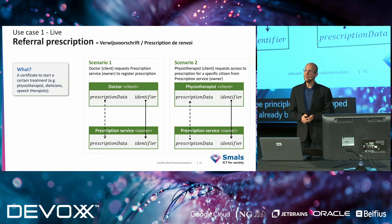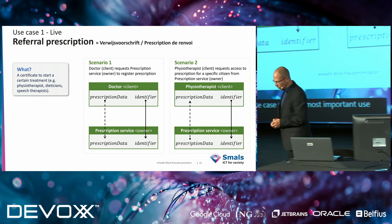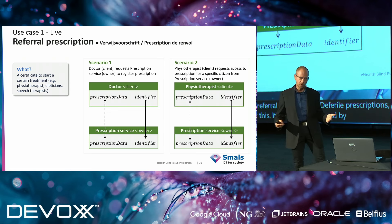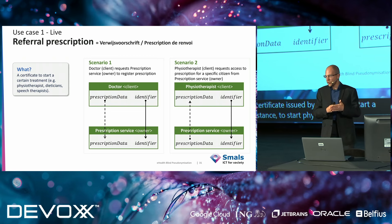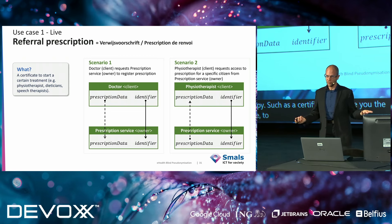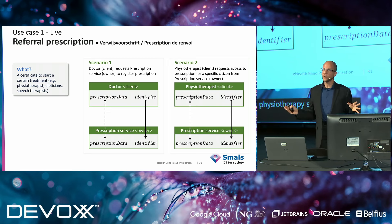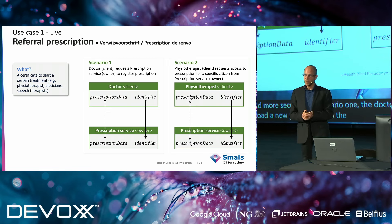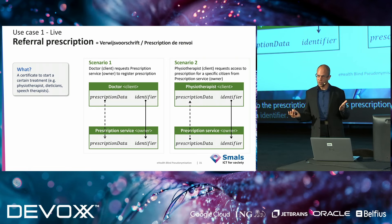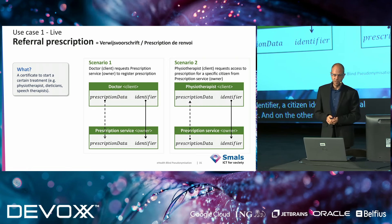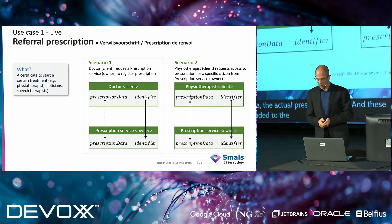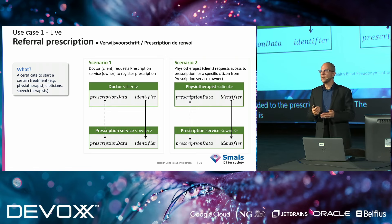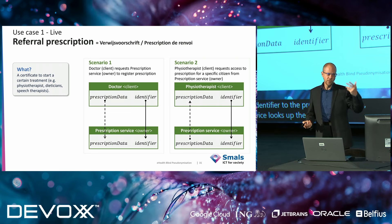Let's start with the most important use case: referral prescriptions. You all know this — it's a certificate issued by a doctor to start a treatment, for instance physiotherapy. Such a certificate can give you the right to, say, 10 physiotherapy sessions. Scenario one: the doctor uploads a new prescription to the prescription service — consisting of a citizen identifier, a social security number, and the actual prescription data. Scenario two: the physiotherapist sends a citizen identifier to the prescription service, which looks up the corresponding prescription data and returns it.